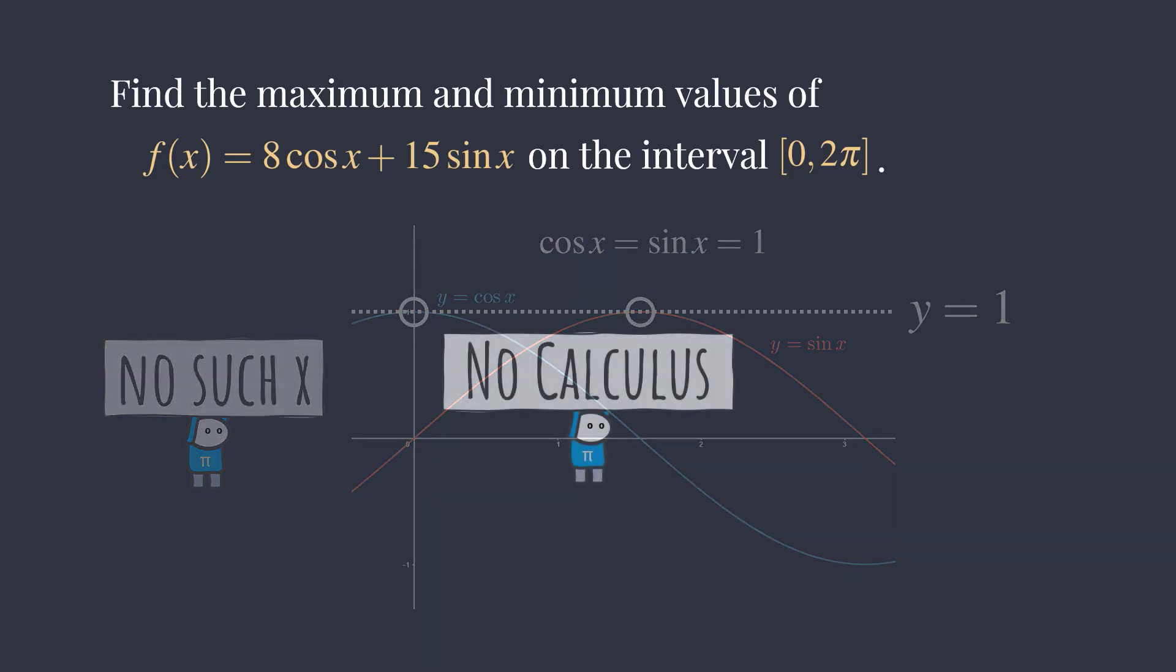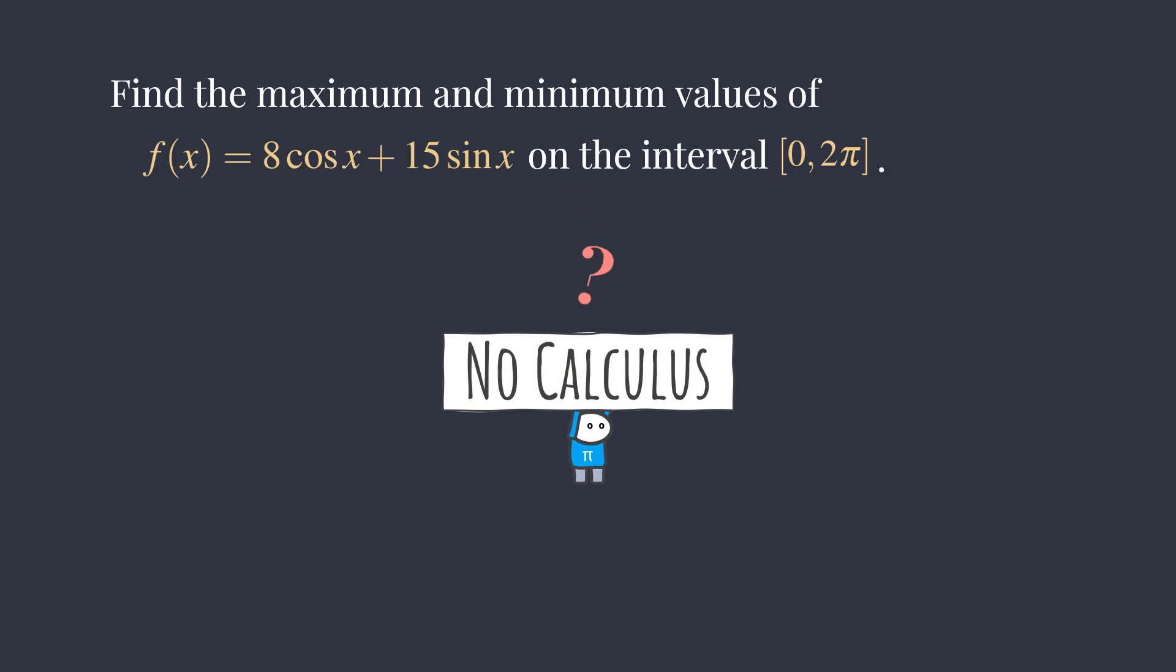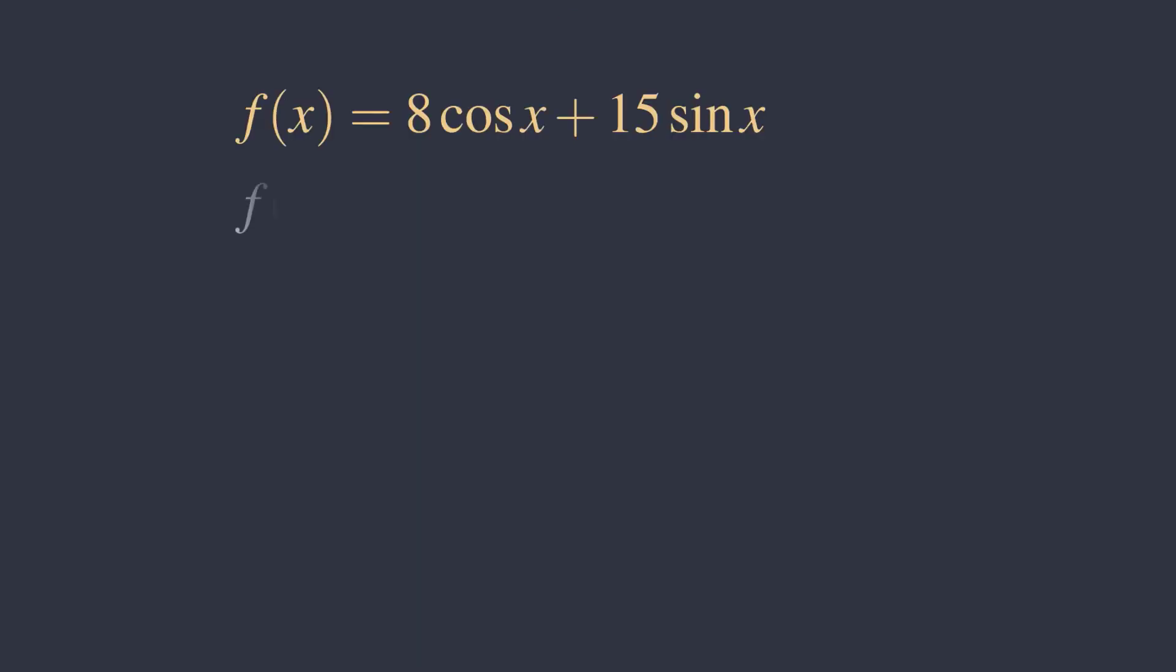So, without taking derivatives, how do we find the max and min? We can write f as a times sine of x plus b, where b is between 0 and π over 2.